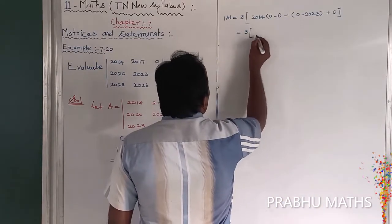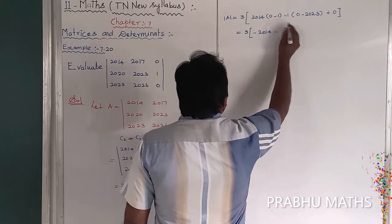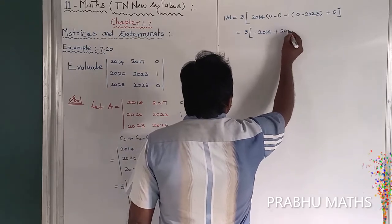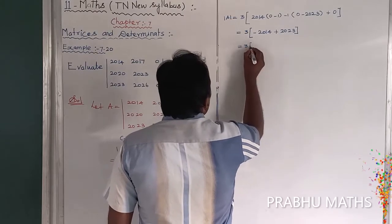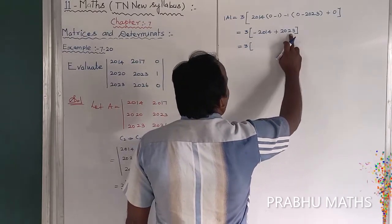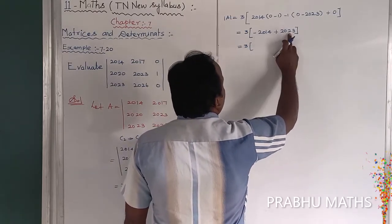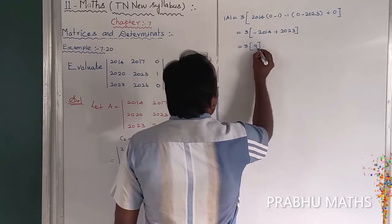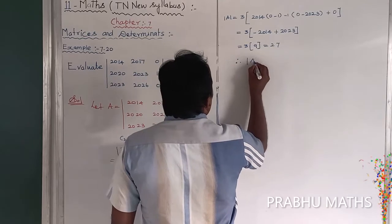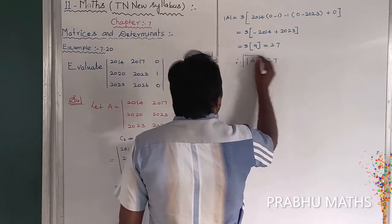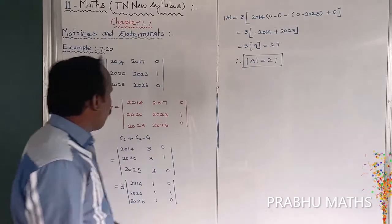So that is equal to 3 into minus 2014, next minus into minus plus 2023. So that is equal to 3 into, this one minus this one plus, so 6 plus 3 is 9. So that is equal to 27. So therefore determinant of A is equal to 27. We get the answer.